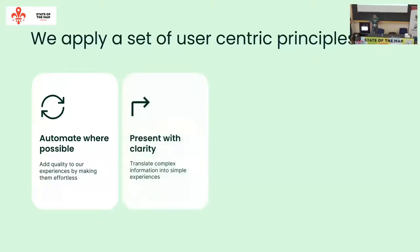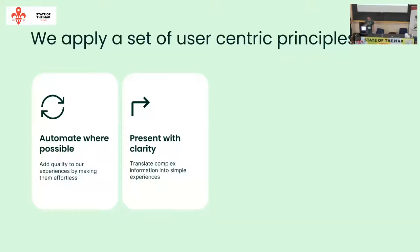The second principle is present with clarity — translate complex information into simple experiences. It's easy to add information because you like it, but the most difficult is deciding what information is not relevant to the user and stripping it off. The most critical information should be presented for the user to see. Translating complexity into simple experiences requires understanding the user by talking to them and communicating with them.